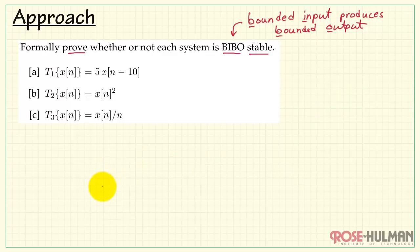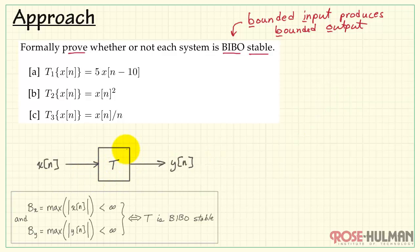Let's take a look at a general proof structure we can use for this. I have a system T with an input X and an output Y. I have a bound B sub X, which is the maximum absolute value of X. The absolute value flips any negative values positive. And of course, we are trying to identify that maximum value as our bound.